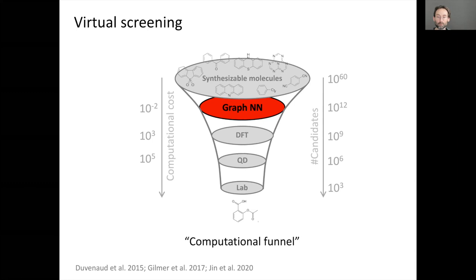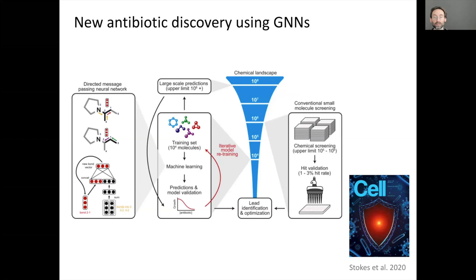More recently, the group of Jim Collins at MIT showed that graph neural networks can do virtual screening of antibiotic compounds, discovering a new class of broad-spectrum antibiotics effective against antibiotic-resistant bacteria. They validated computationally and via in vitro and in vivo experiments in mice, discovering a new antibiotic candidate called Halicin.